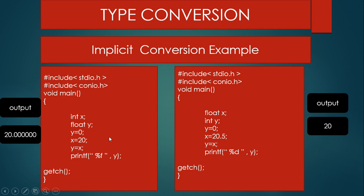We will first discuss about implicit conversion. I am taking here two examples for implicit type conversion. In the first example, I am declaring an integer variable X and a float variable Y. I am assigning 0 to Y and 20 to X. Then I write Y equals X, meaning I am assigning the value of X to Y.